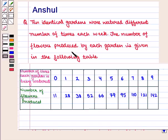The number of flowers produced by each garden is given in the following table. In the first row we are given the number of times each garden is being watered, and in the second row we are given the number of flowers produced.